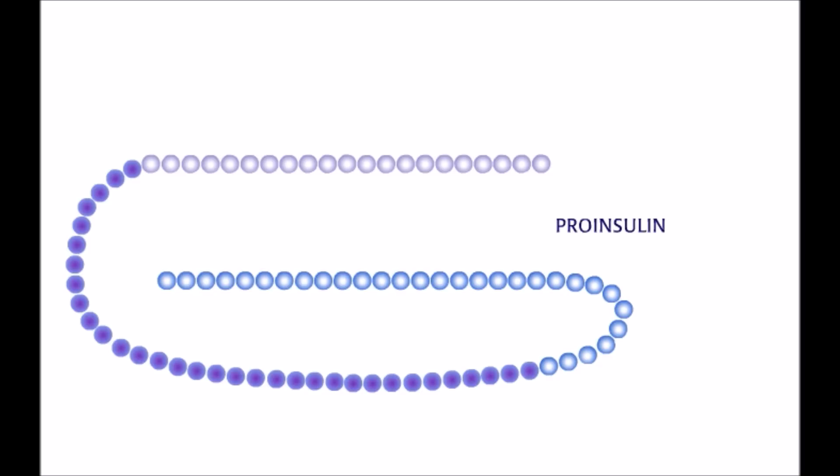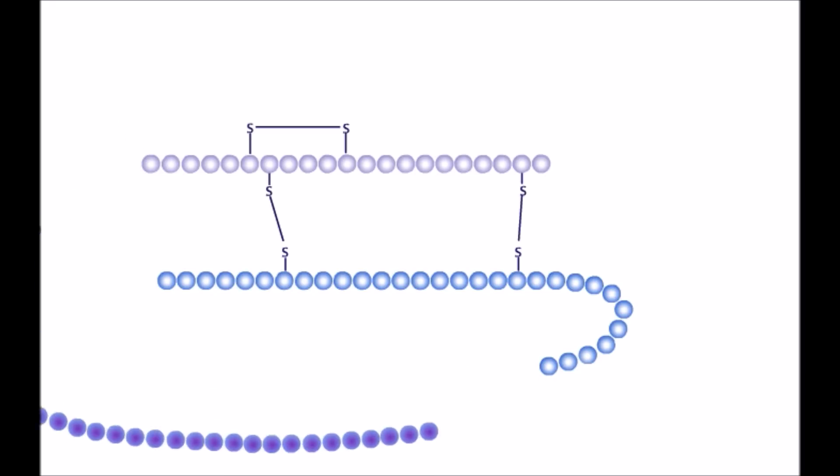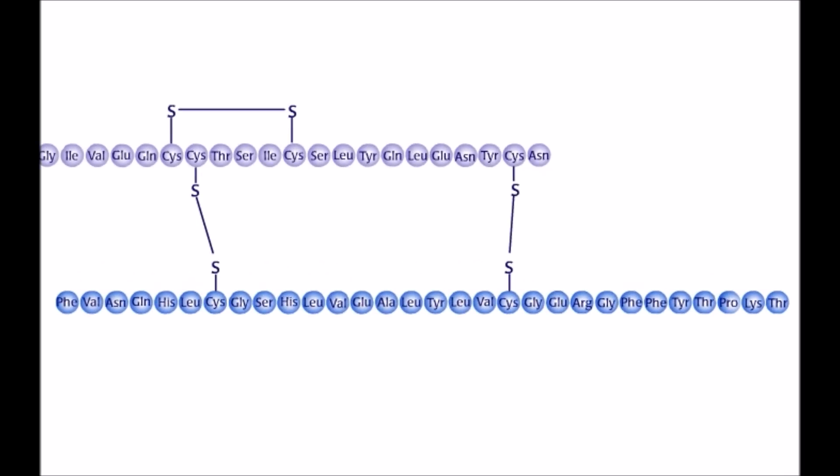Protein folds into a looped structure as disulfide bridges are made between cysteine amino acids. A 33 amino acid stretch is cleaved off leaving mature insulin.